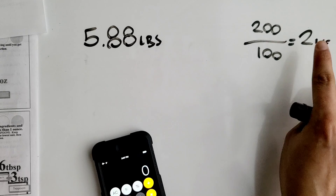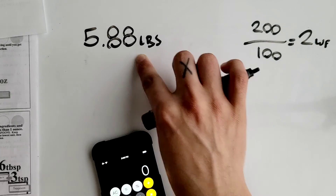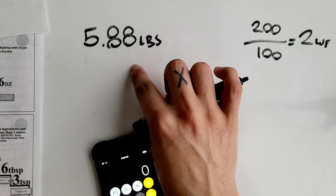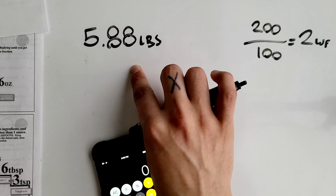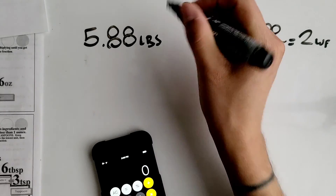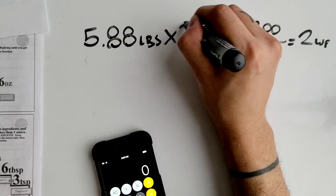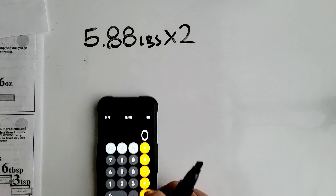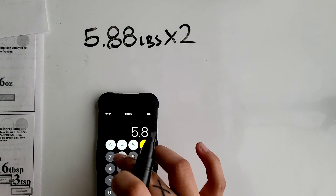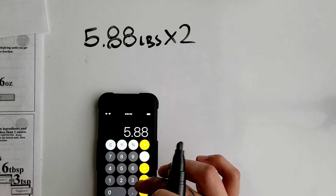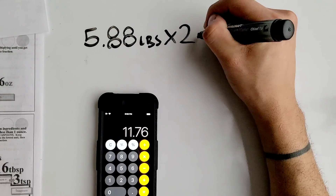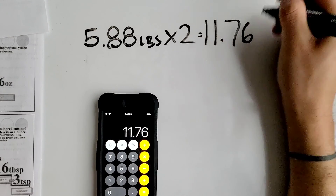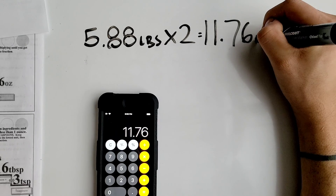After we find our working factor, we have to multiply it by the ingredient amount. In this case, it's 5.88 pounds of pineapple slices multiplied by the working factor of 2.